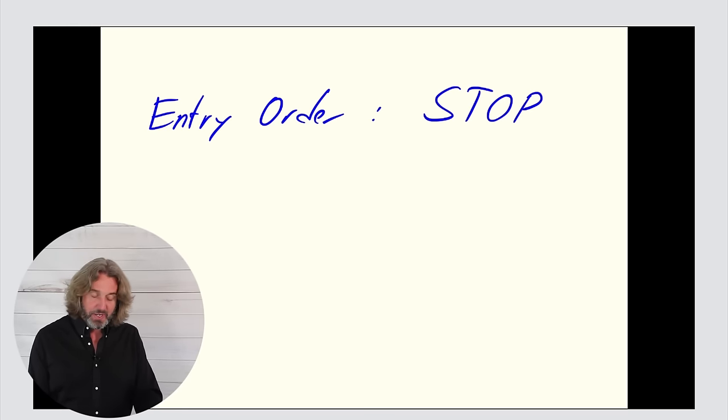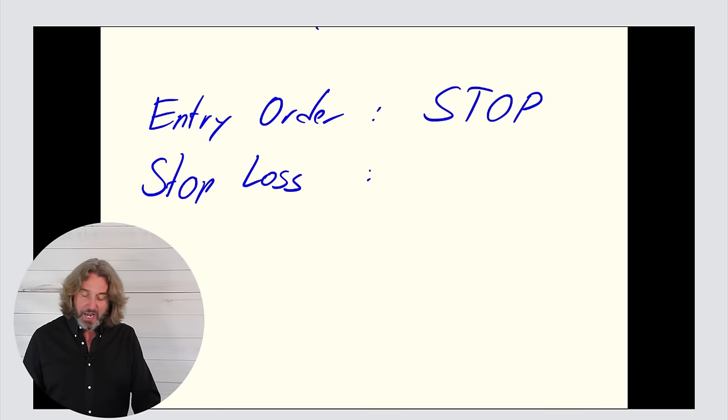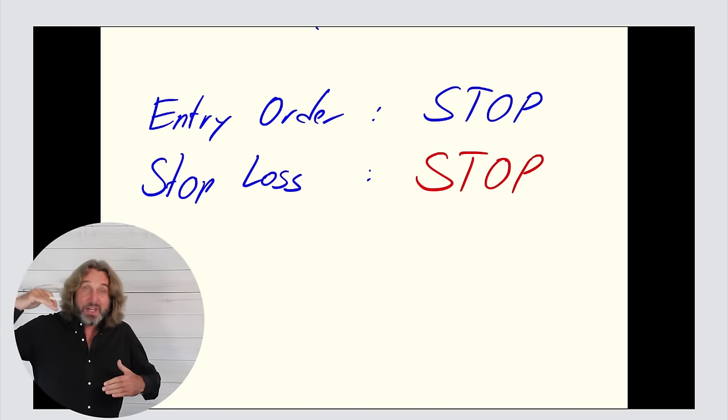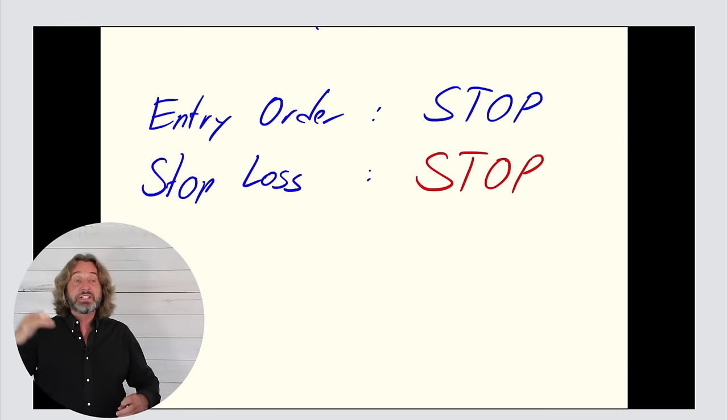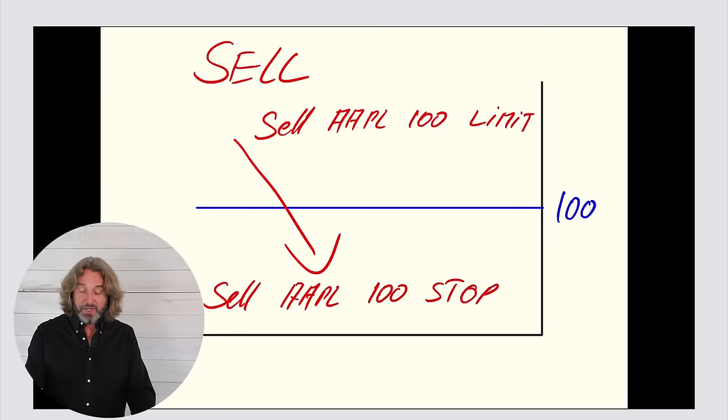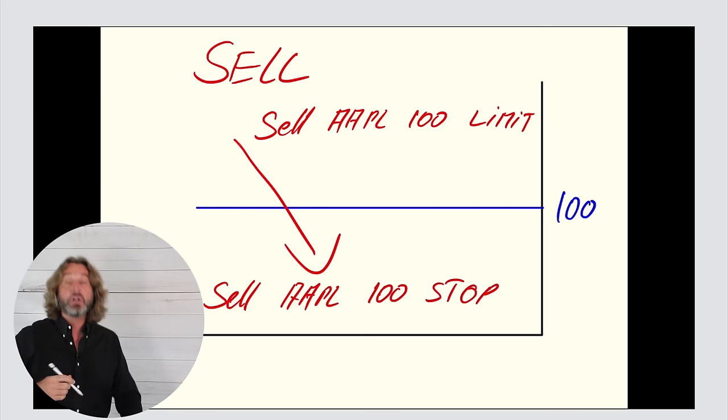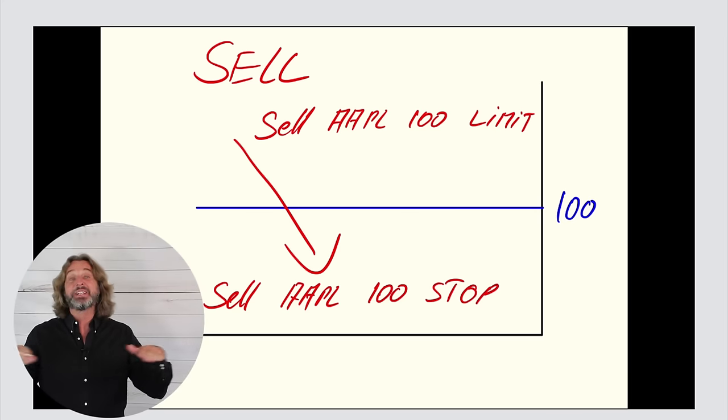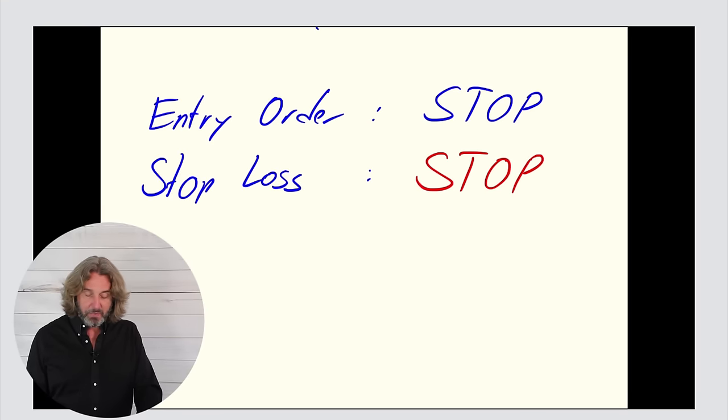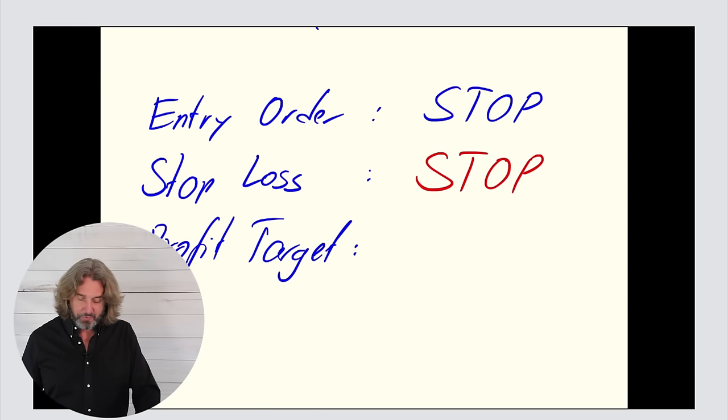For my entry order I am using a stop order. For my stop loss, and the name kind of says it already, I'm using a stop order because I want to make sure that if the trade is going against me, as soon as it hits the predefined level that I'm automatically exiting. This is where if I bet on a rising market and the stock goes against me, as soon as it hits my predefined level I want to get out of this. Now, for my profit target I am using a limit order.